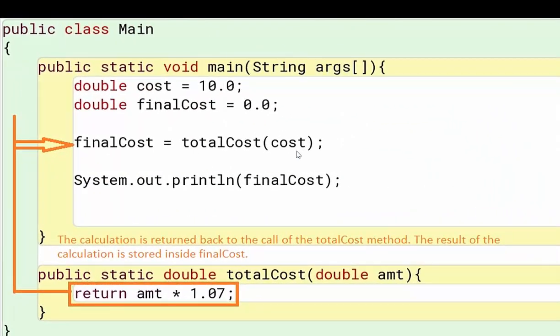Then we have the return statement. The calculation is returned back to the call of the totalCost method. Right here, totalCost, open parentheses, cost, close parentheses. That is where I'm calling this method. I simply type in the name and then I'm calling the method. The result of this calculation, amt times 1.07,